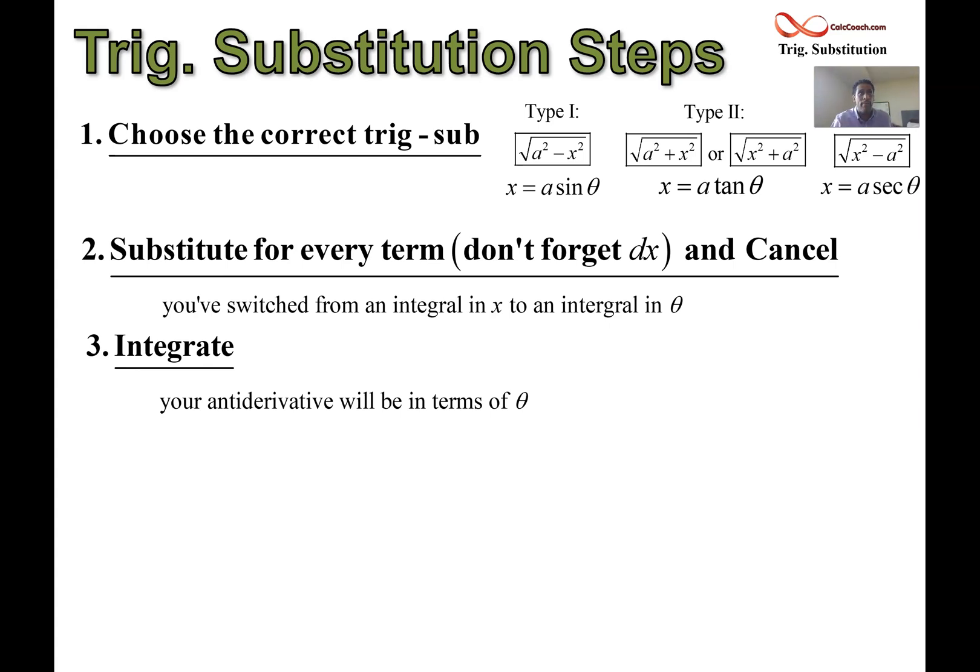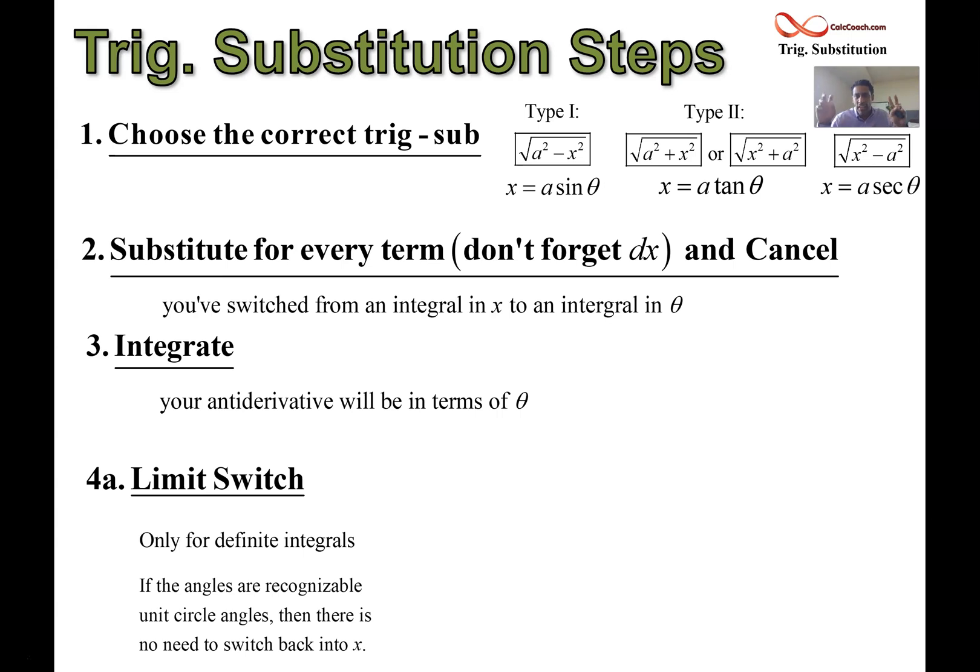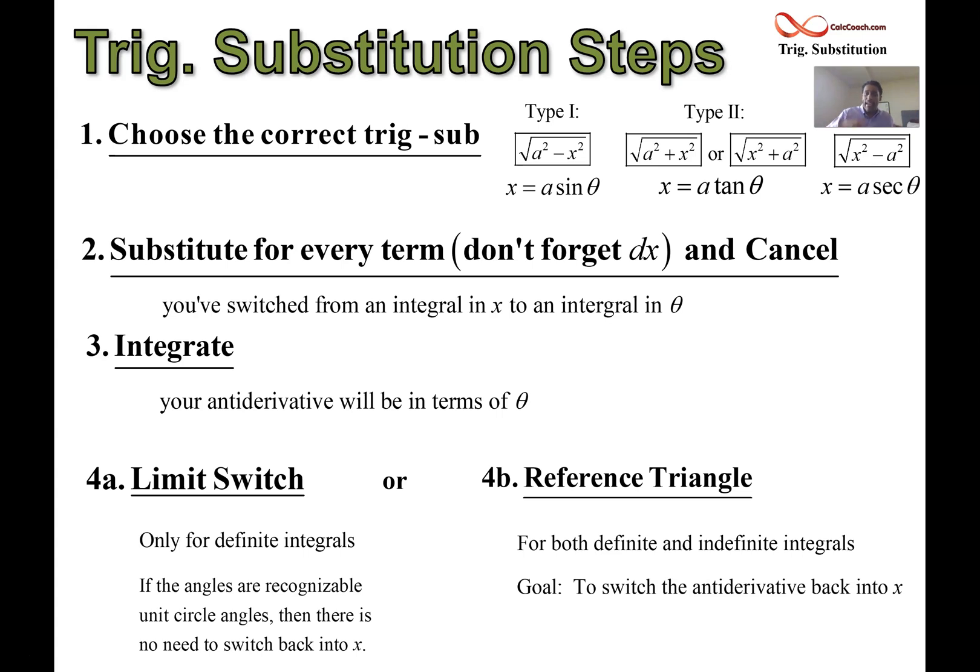If you have a definite integral with bounds, you're trying to find the area under some curve, then you could do a limit switch. You know, it's only going to be for definite integrals where you could actually say, here are my x limits, and now let me trade them in for theta limits. But I would only caution you to do that if the angles that you end up are nice, recognizable kind of unit circle angles, pi over 4, pi over 6, pi over 3. If you don't have those, then don't do it. Otherwise, just stick to the reference triangle. That works whether you're definite or indefinite. And remember, its goal is to switch it back into x. You'll have an antiderivative in theta, and that switches it back into an antiderivative in x.